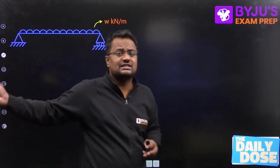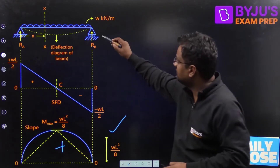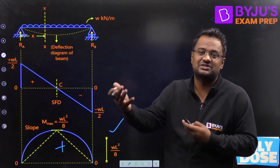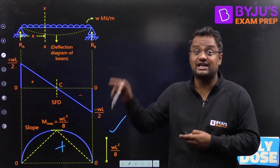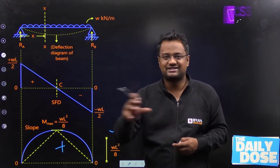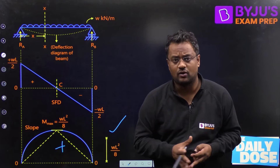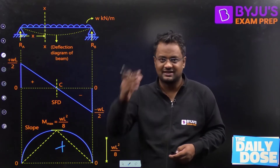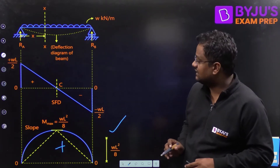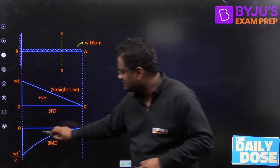Moving further, for this beam the SFD and BMD will be something like this — that is positive. This beam will be deflected in sagging. Those who have not seen the AN method — Abhinav Negi method — please see it for drawing SFD/BMD, the fastest way on the planet. You can search on YouTube for 'fastest way on planet SFBMD' and you will get it. From that method we get this BMD, so this is a sagging bending moment which is positive. Similarly, for a cantilever beam loaded with UDL, the bending moment will be negative — that is hogging.